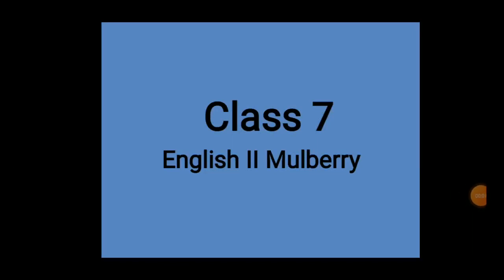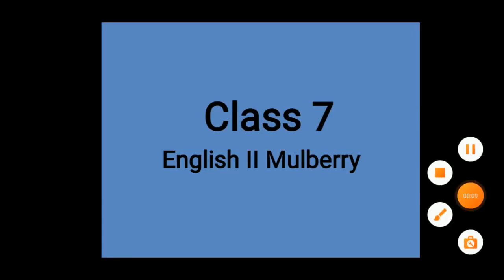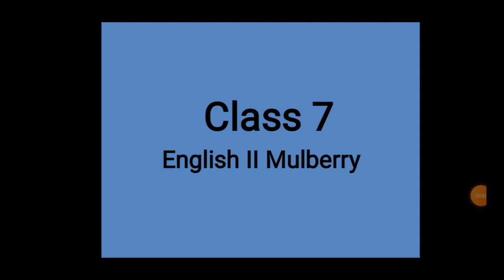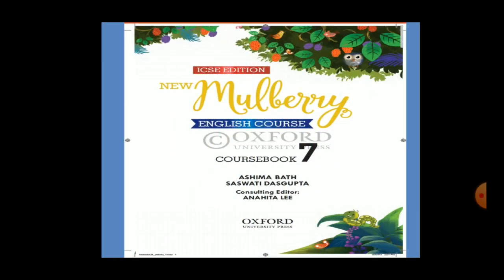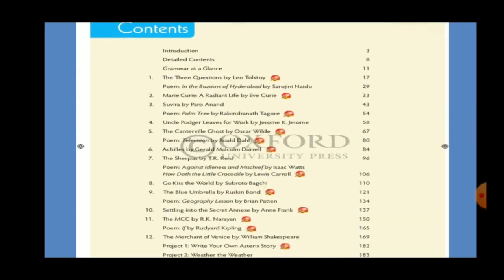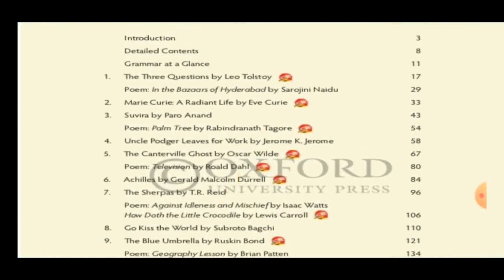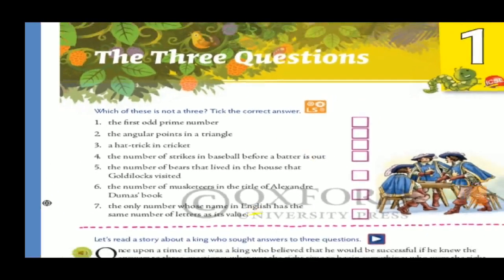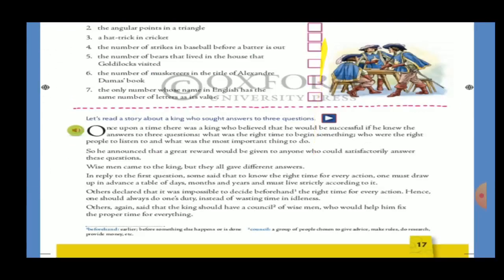Hello, my dear kids, welcome to the class of English Second Mulberry, class 7. This is our book Mulberry Course 7 — it is for seventh class. This is the page of contents, where the content is given. The first chapter is 'The Three Questions' by Leo Tolstoy. We will study this first chapter — chapter number one, page number 17 in your book.